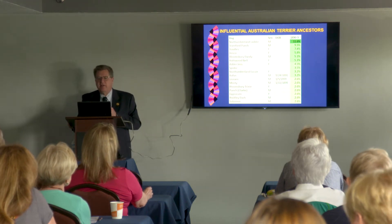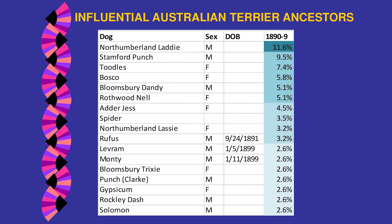Now I'm taking the worldwide database and looking at who the influential founders and ancestors are in your breed. Looking at dogs born 1890–1899: Northumberland Laddie had an average relationship coefficient of about 11.6% across all dogs. Other early influential dogs include Stanford Punch, Tootles, Bosco, Bloomsbury Dandy, and Rothward Nell — dogs you've probably never even heard of, but they are the originators of your breed in the 1890s.